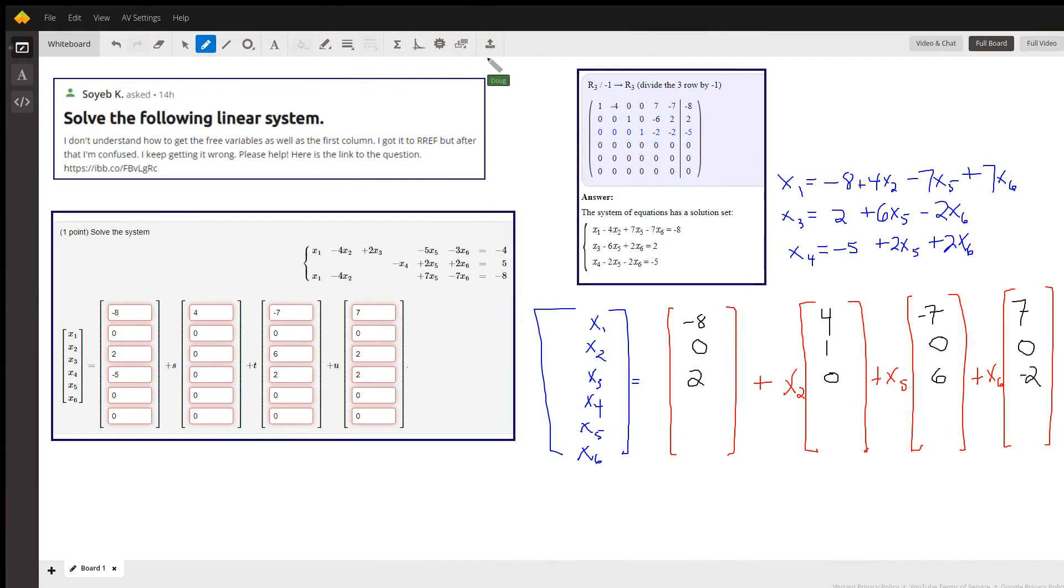Okay, based on the question posted, I'll go through this pretty quickly. We've got this system of three equations with six unknowns, and what it says to do is solve the system for one point.